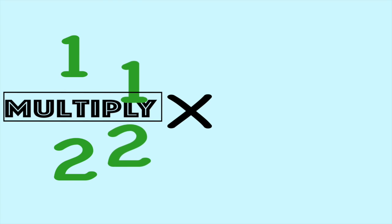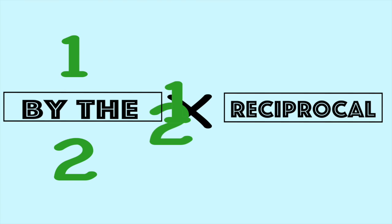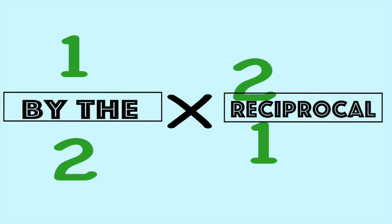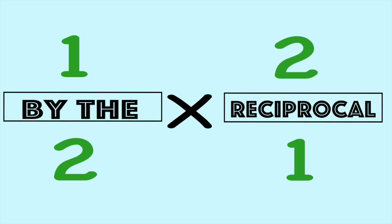Dividing, we multiply by the reciprocal. Switch the top and the bottom for the reciprocal.